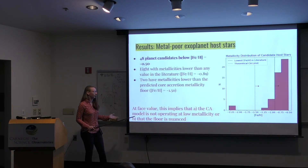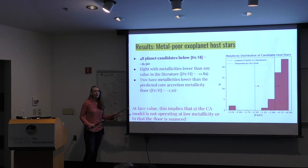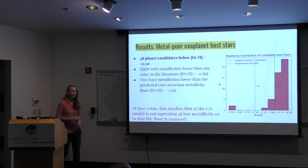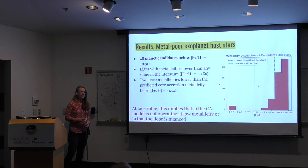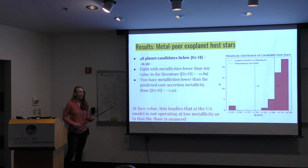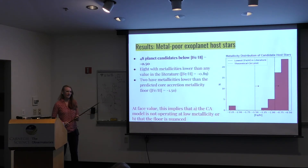At face value, surely some of these will turn out to be false positives, but this implies that the core accretion model is either not operating at low metallicity or that the floor is nuanced — maybe we need to take into account more elements than iron when thinking about the metallicity floor. The core accretion model has a theoretical limit at minus 1.5 related to both the temperature of the disk and the amount of material in it. Metallicity errors from SkyMapper are typically in the range of 0.1 to 0.2 dex, and we will be obtaining spectroscopic confirmation of all of these stars.